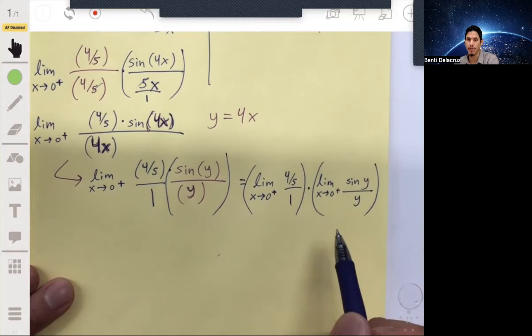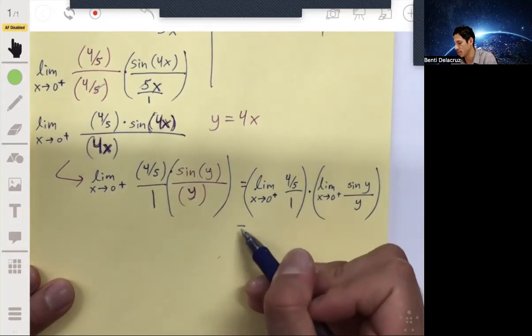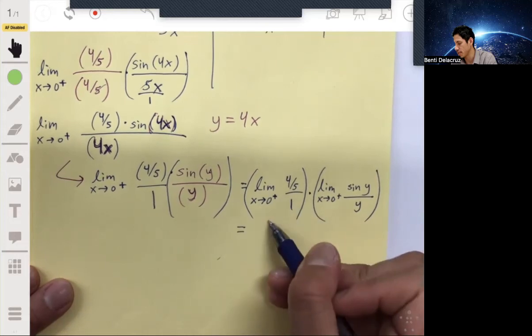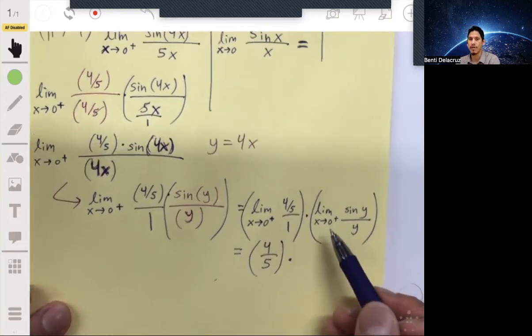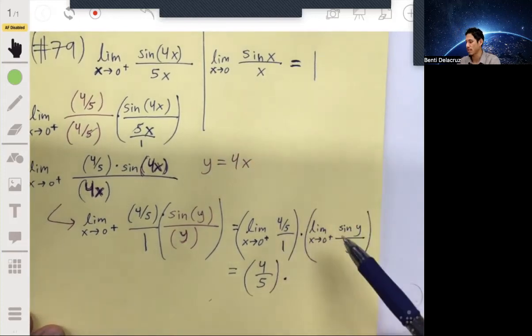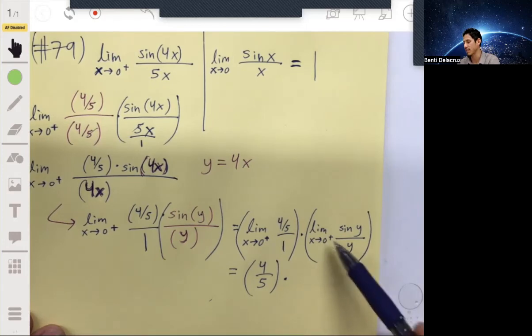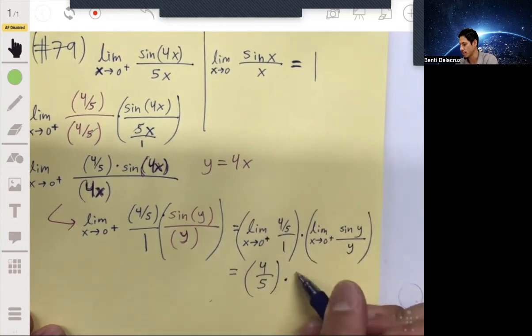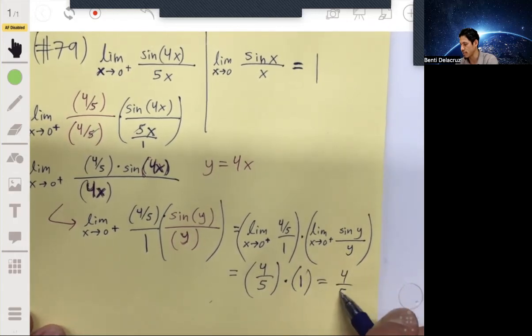And then you can evaluate the limits separately. Here, since you don't even have a variable in your expression, this is just going to be equal to four-fifths. And again, we're given by the theorem that sin(y) over y as x approaches zero, it doesn't matter if it's the positive side or negative side, this will just be four-fifths times one, and your answer will just then be four-fifths.